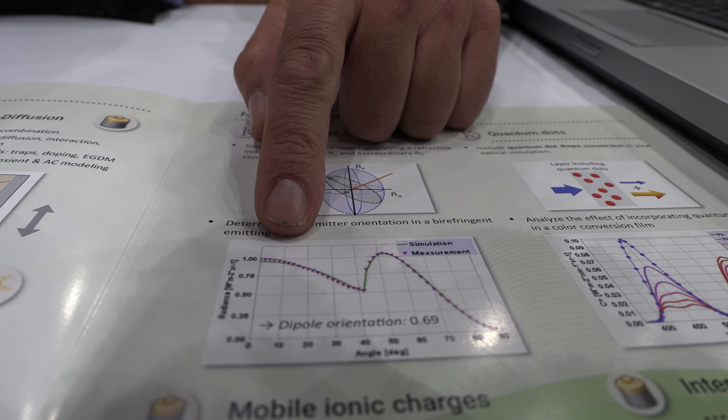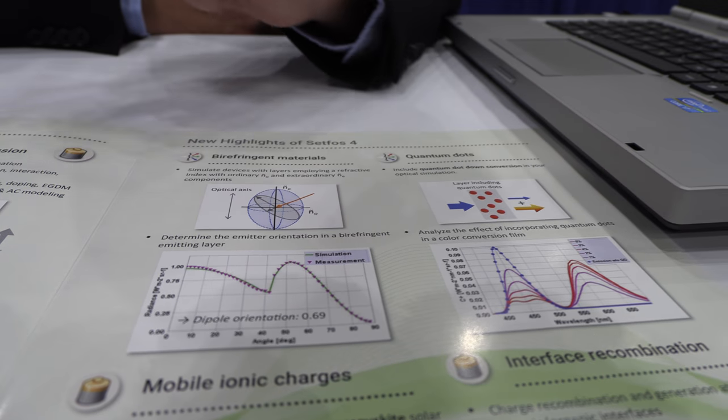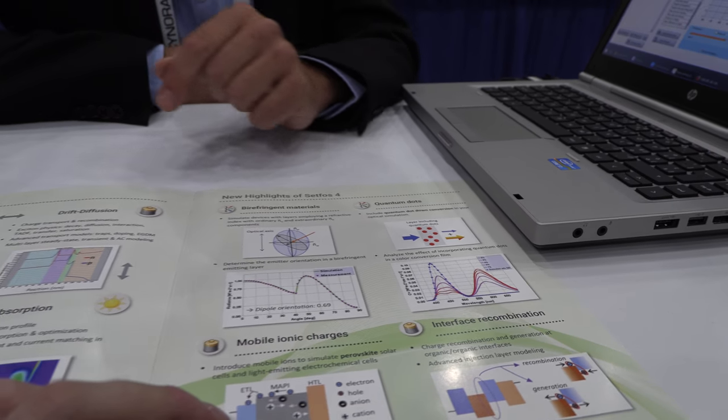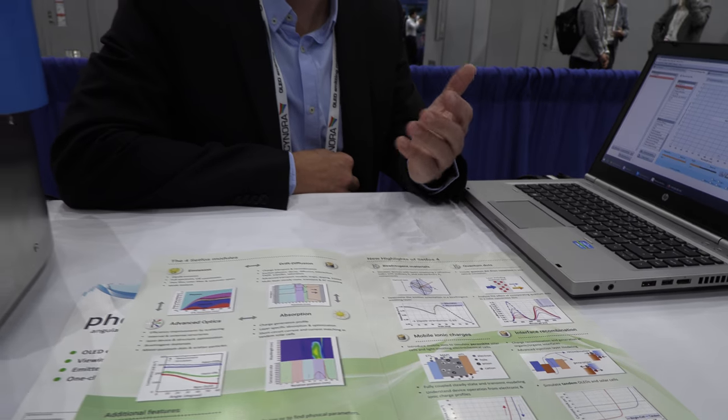These purple data points are measured and the green line is the simulation. And thanks to the good agreement we can get the material parameter, namely the molecular orientation of the emitter film, which is a key optimization parameter. The more horizontal the molecules, the more light out-coupled to the air.